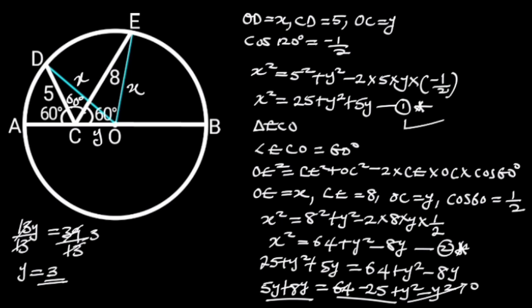Doing so will give us X squared is equal to 25 plus 3 squared plus 5 times 3.